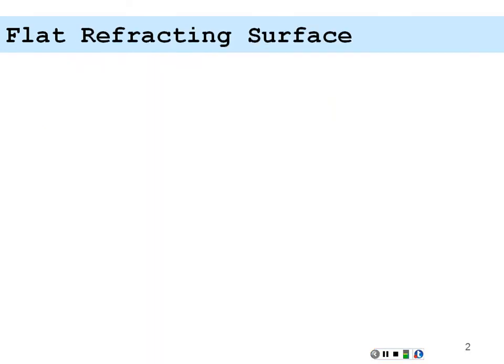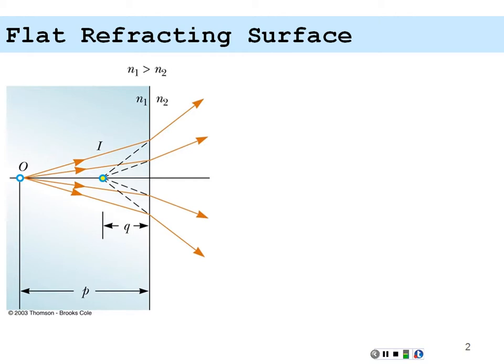Let's take these newfound formulas to the absolute extreme and look at a flat refracting surface. In this case our first index is greater than our second index, and our radius of curvature of the interface is actually going to be infinity — because if you have a radius of curvature and you start increasing it, your curvature goes flatter and flatter as R gets larger and larger.